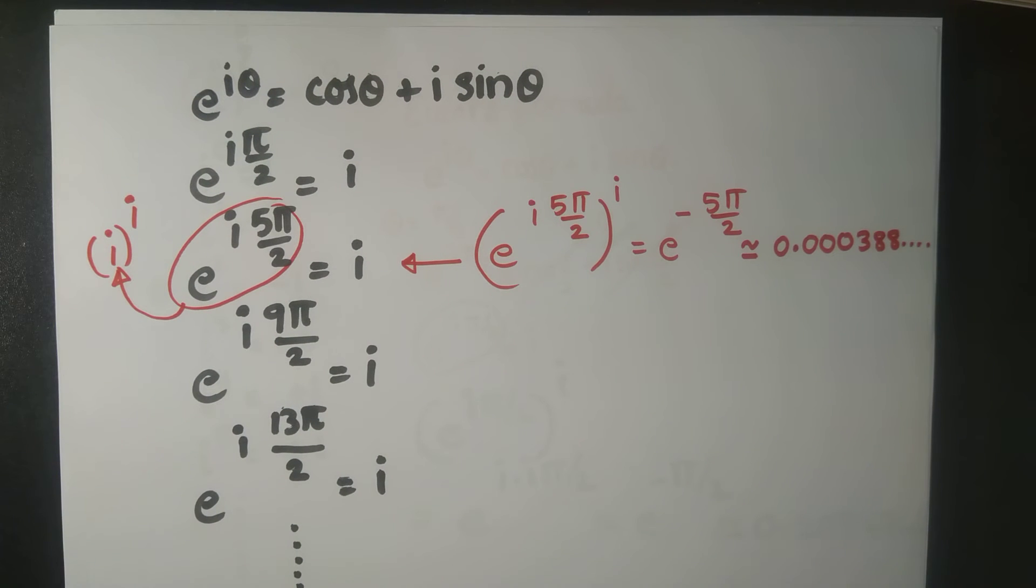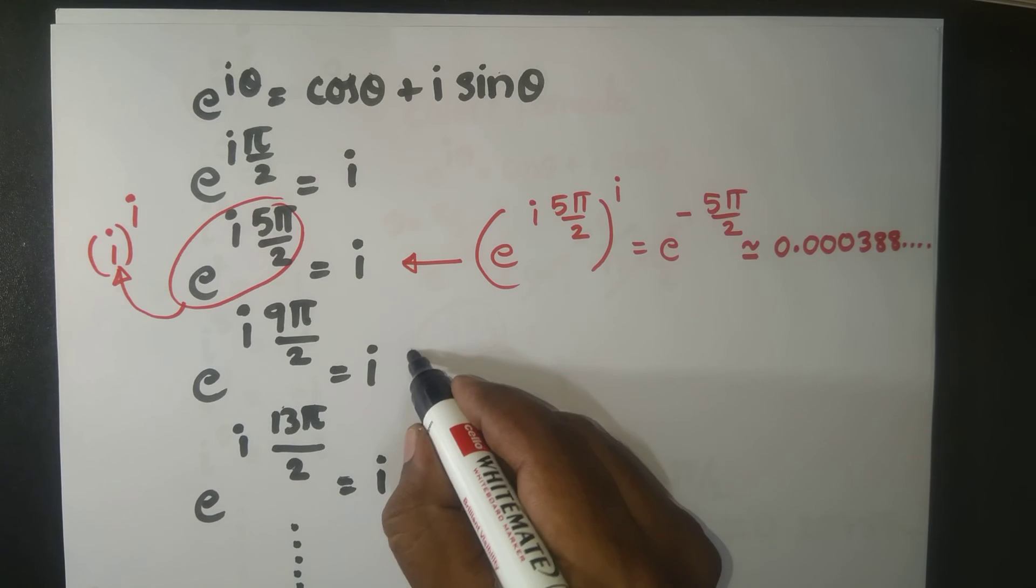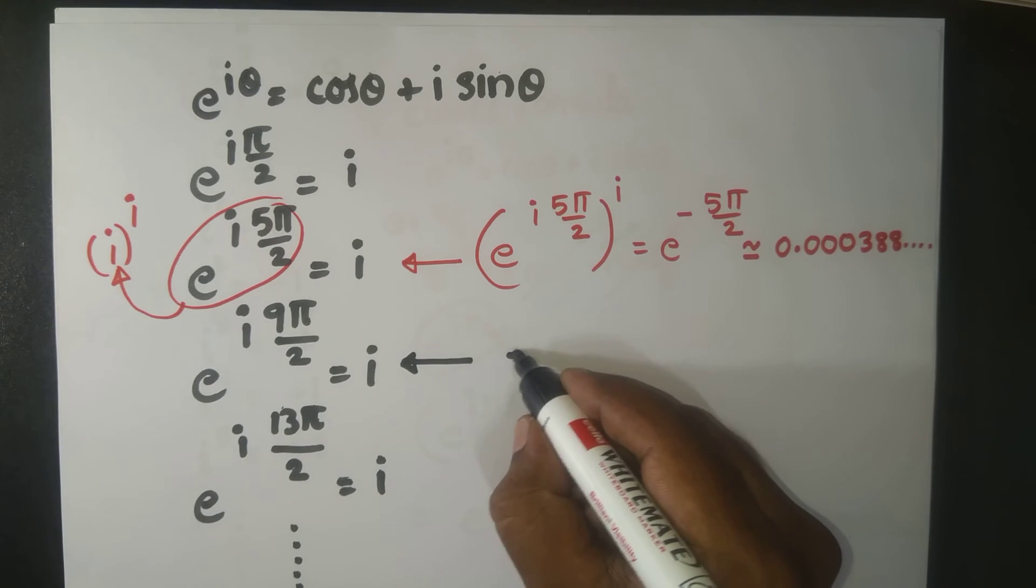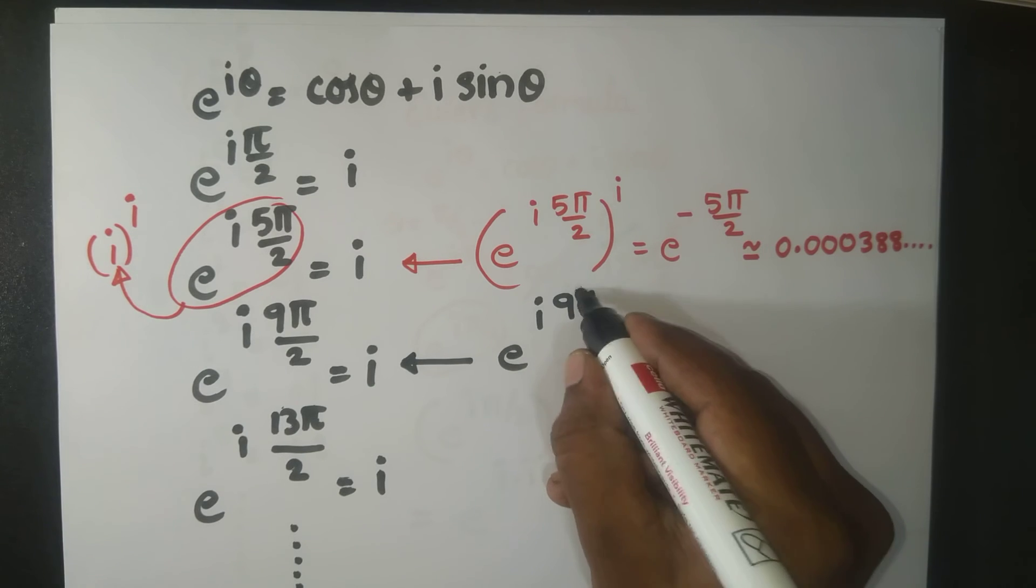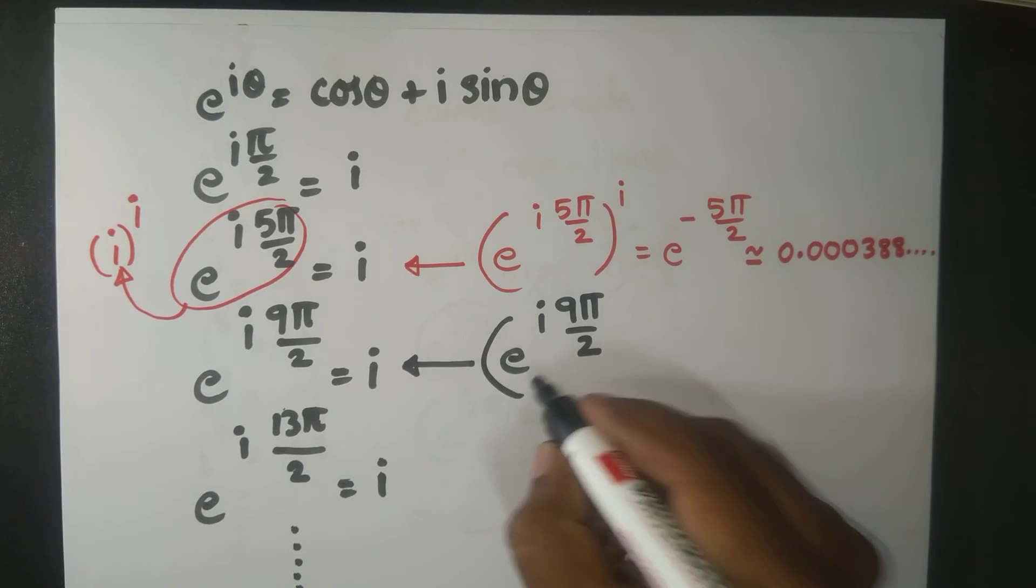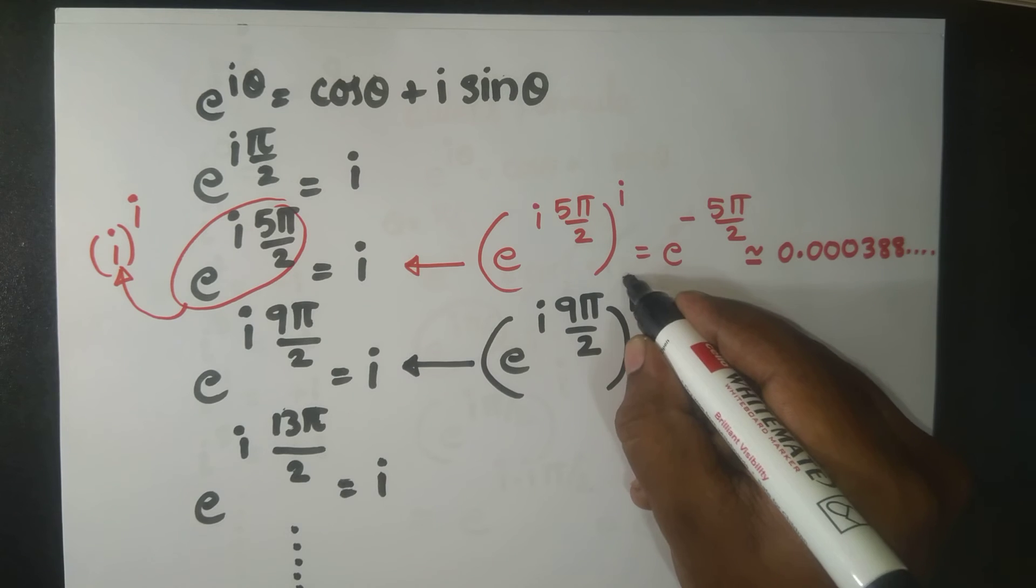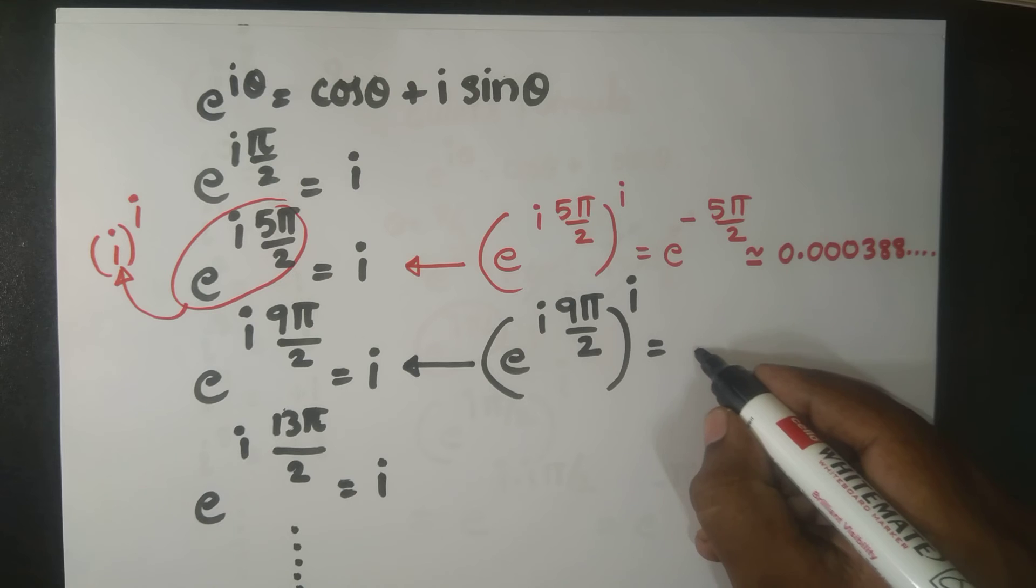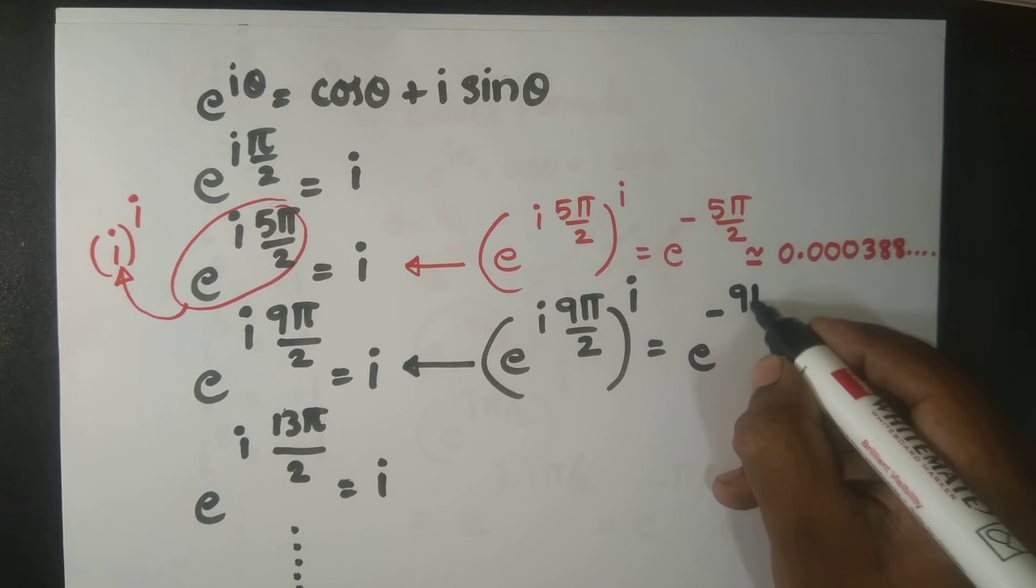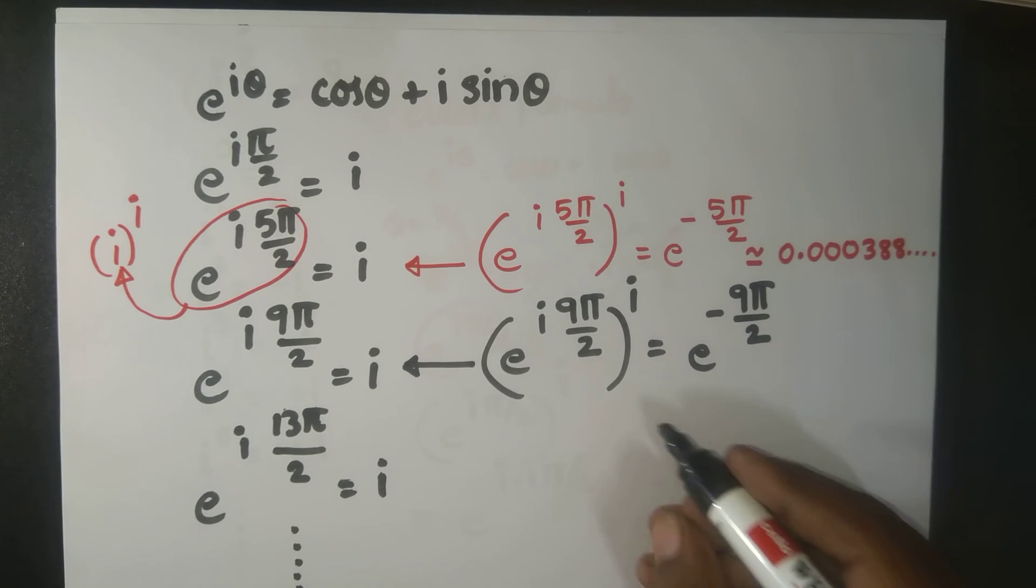All right, so similarly here now, in place of i I put this: e^(i·9π/2) raised to the power of i again. What is i multiplied by i? i^2 is negative 1, so this becomes e^(-9π/2).